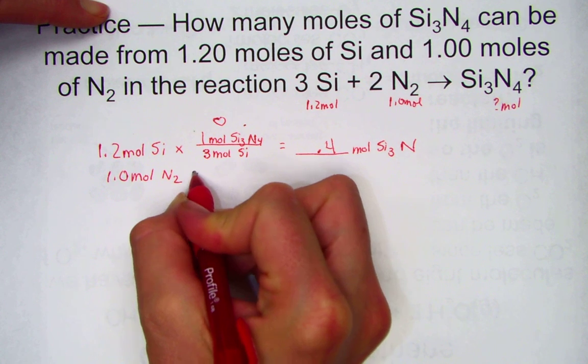And along the way, we'll have to identify the limiting reagent. Let's start with the first reactant: 1.2 moles of silicon.